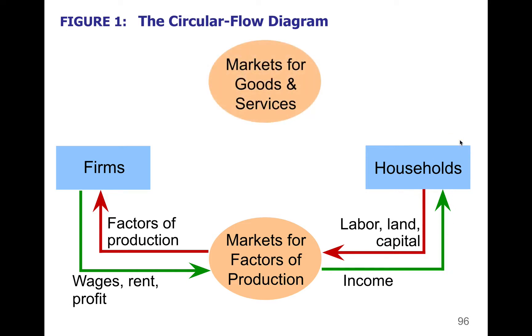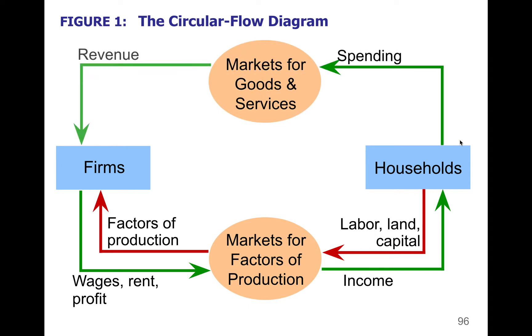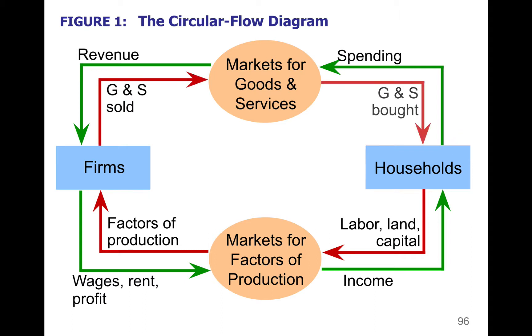We also have a market for goods and services where households spend their money and buy things. That money is called revenue to the firm, and the business sells goods, services, or outputs which households then purchase.